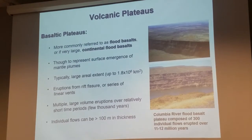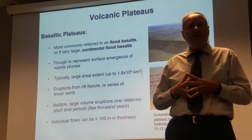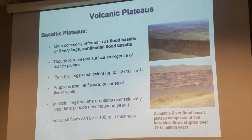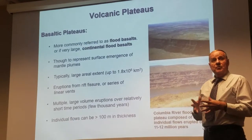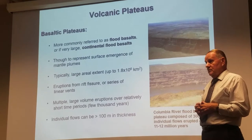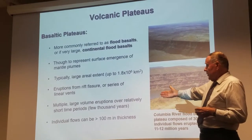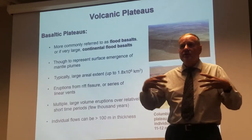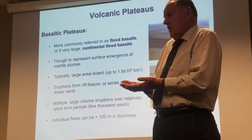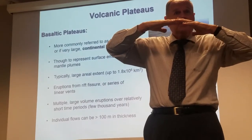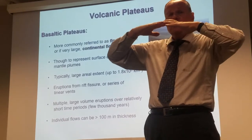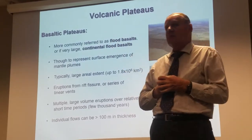Let's start with the basaltic plateaus. Again, these are characterized by flood basalts — very large continental flood basalts. Most people believe this represents the emergence of a mantle plume. The plume has the ability to create a huge mass of eruptive material over relatively short periods of time — like thousands of years. These erupt from a rift fissure or a series of linear events. The reason most people think it's a rift fissure is that when the plume head comes to the surface, it elevates and puts the surface in tension as it pulls up — ballooning up — creating a series of fissures through which the magma from the plume head can then erupt.